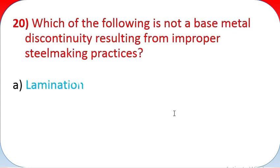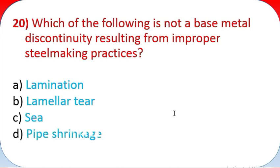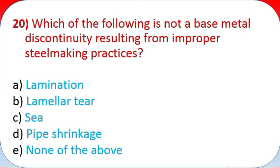Question 20: Which of the following is not a base metal discontinuity resulting from improper steelmaking practices? A - lamination, B - lamellar tear, C - seam, D - pipe shrinkage, E - none of the above.